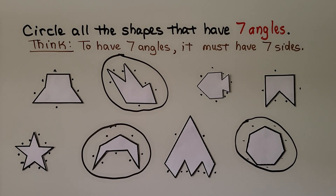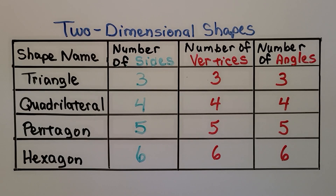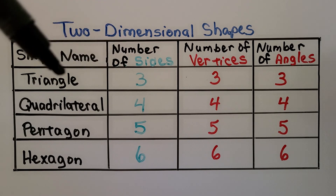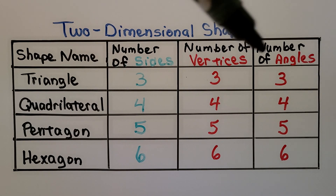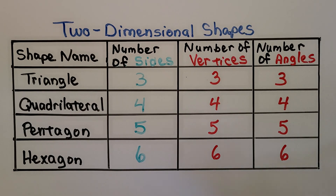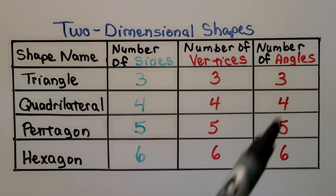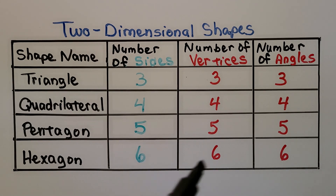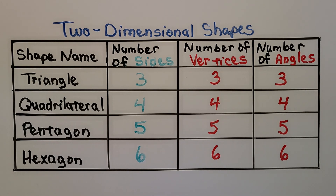For two-dimensional shapes, the number of angles is going to be the same as the number of vertices and sides. For a quick review, these are two-dimensional shapes: triangle, quadrilateral, pentagon, hexagon. The number of sides, vertices, and angles are the same for each shape. Triangle is three, three, three. Quadrilateral is four, four, four. Pentagon is five, five, five. Hexagon is six, six, six. The number of sides equals the number of vertices, which also equals the number of angles — and this is for two-dimensional shapes.